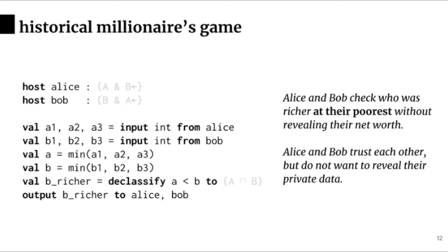In this program, Alice and Bob trust each other not to cheat, but do not trust each other with their private data. The program itself is written in a simple imperative language. We call this example the historical millionaire's game, a variant of the famous millionaire's game by Andrew Yao for multiparty computation. In this game, Alice and Bob each provide as input their total net worth over three periods of time. They each then compute the minima of their net worths and compare these minima to see who was richer between the two of them when they were at their poorest. The result of the comparison is then sent as output to both Alice and Bob. The distributed program should be implemented such that Alice and Bob do not reveal anything about their net worths other than who was richest at their poorest.